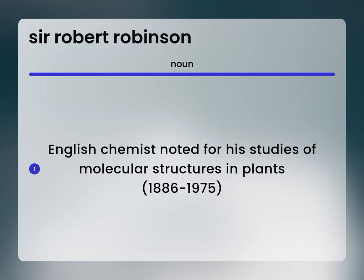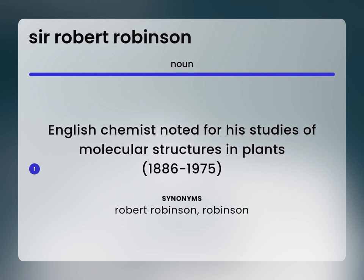Robert Robinson. English chemist noted for his studies of molecular structures in plants, 1886–1975.